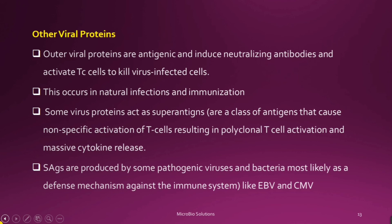Some virus proteins act as superantigens. Superantigens are a class of antigens which can cause non-specific activation of T cells, leading to polyclonal activation of T cells. When T cells are activated, they release cytokines. Superantigens are produced by some pathogenic viruses as well as bacteria, most likely as a defense mechanism against the immune system so that the virus and bacteria can survive. Examples are EBV (Epstein-Barr virus) and CMV (cytomegalovirus).